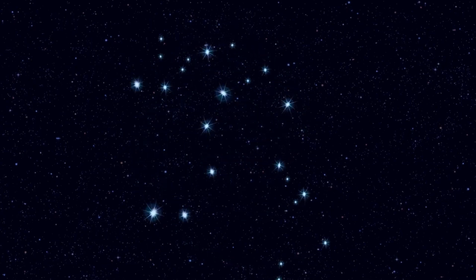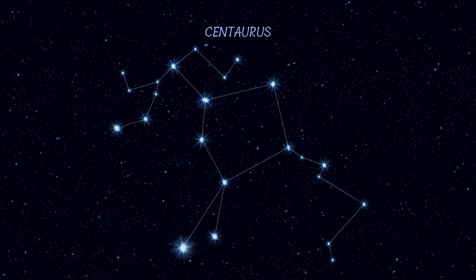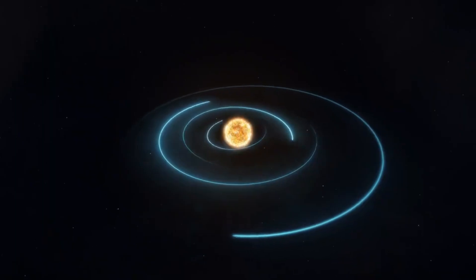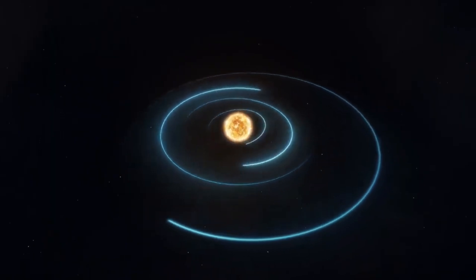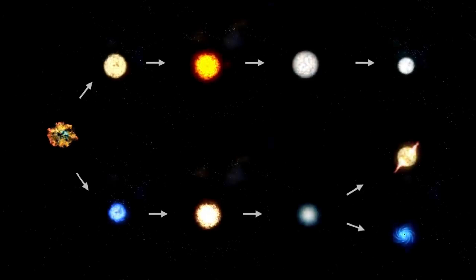Betelgeuse, the red supergiant star located on the shoulder of Orion the Hunter, has long captivated astronomers and stargazers alike. Known for its striking reddish hue and prominent position in one of the most recognizable constellations, Betelgeuse is a star that commands attention. But in recent years, this celestial giant has exhibited peculiar behavior that has sparked excitement and speculation among scientists and amateur astronomers.